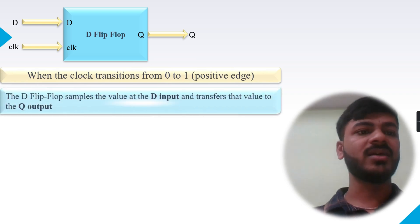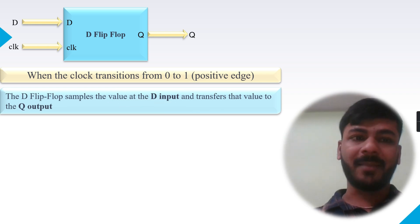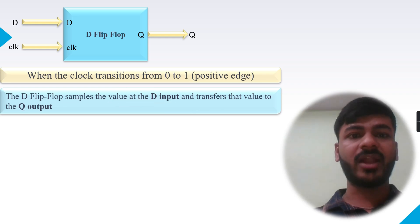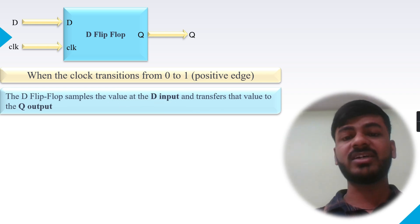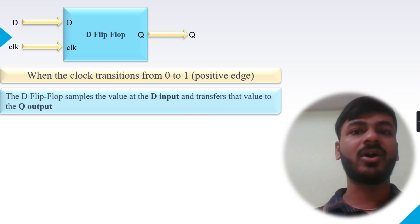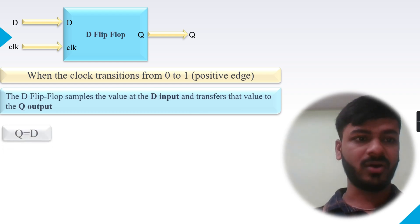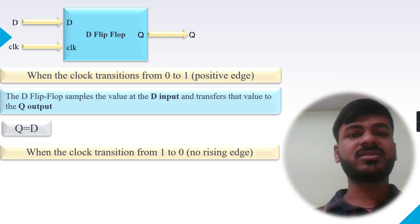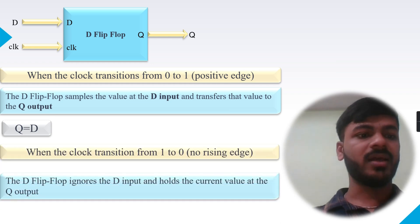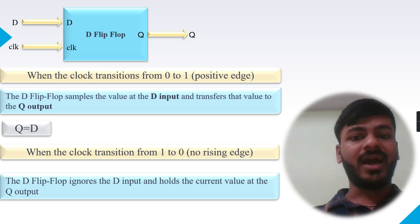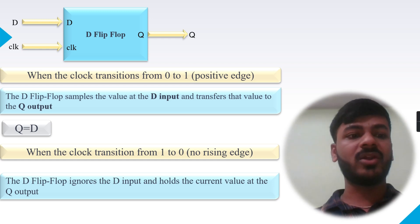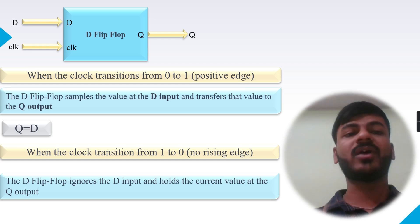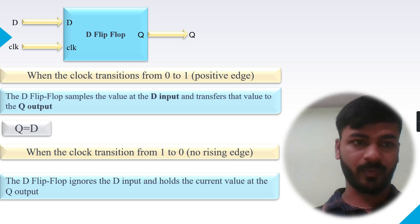When the clock is on the positive edge — that is, when the clock transitions from zero to one — the D flip-flop samples the value at the D input and transfers that value to the output Q. When the clock transitions from one to zero, that is on the negative edge, the D flip-flop ignores the D input and holds the current value at the Q output.